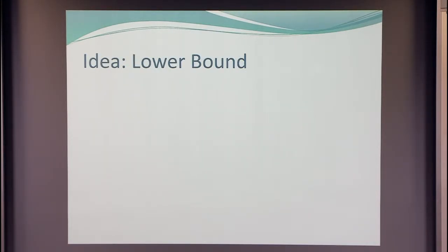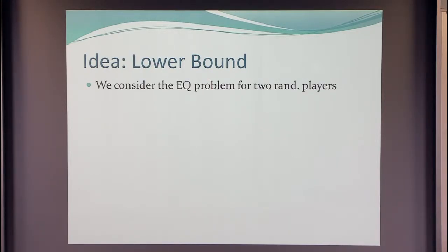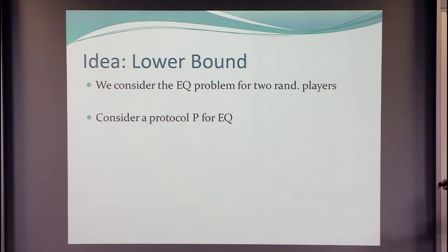Now I'm going to prove just the straight randomized lower bound, and I'll say later how to extend this. We consider the equality problem where there are two players who send random messages. This is maybe a step that is somewhat unorthodox: we consider a given protocol P. Usually in communication complexity, you don't consider the protocol — you look at properties of the communication matrix, showing there's no big clean rectangle or anything like that.